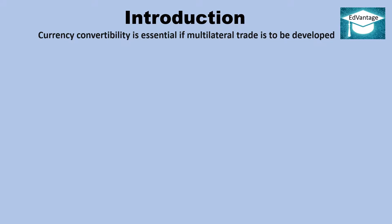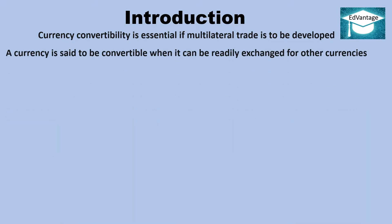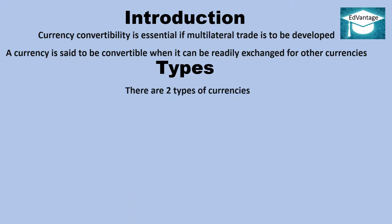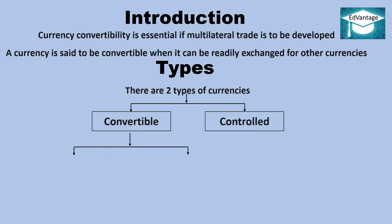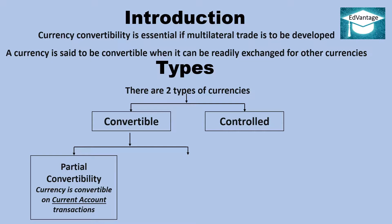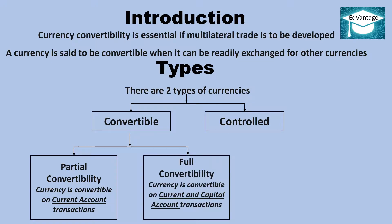Introduction: Currency convertibility is essential if multilateral trade is to be developed. A currency is said to be convertible when it can be readily exchanged for other currencies. There are two types of currencies — convertible and controlled. There are two types of currency convertibility: partial convertibility, where currency is convertible on current account transactions, and full convertibility.